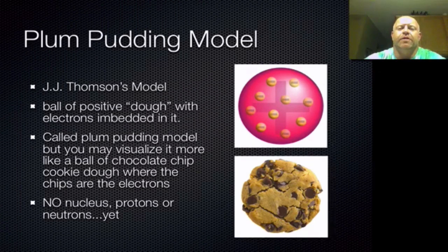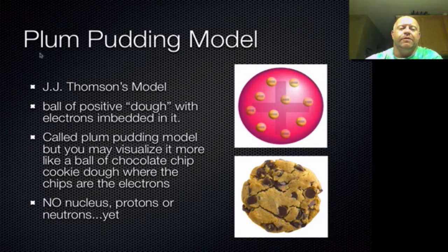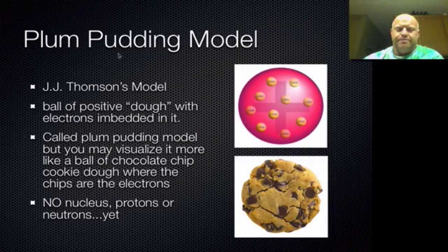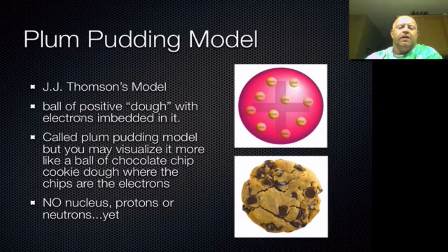From his experiments with the cathode ray tube, Thompson was actually able to update and modify the current understanding of the atom. He came up with his own model, which he dubbed the plum pudding model. Many of us don't really know what plum pudding is anymore — it's some sort of bread with raisins, craisins, and other nuts in it. The idea behind his model is that there's a ball of positive, dough-like material that makes up the atom.